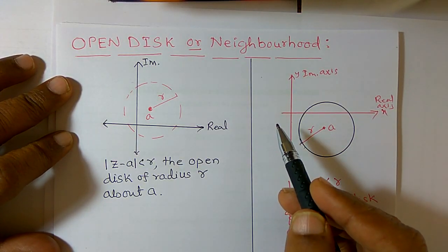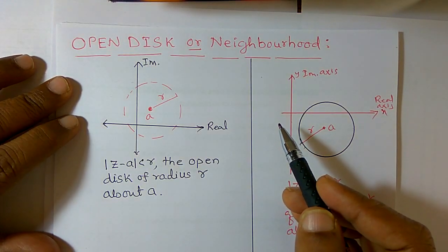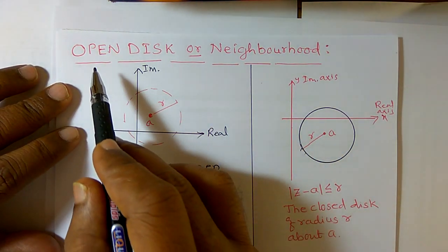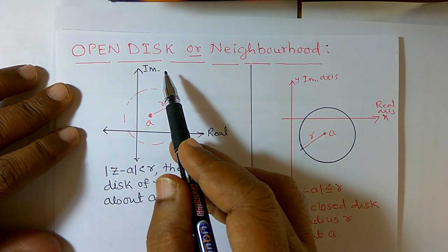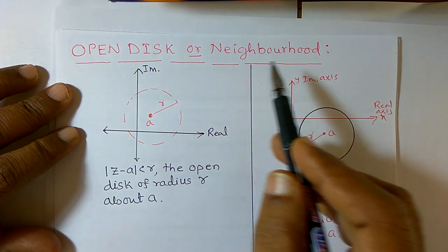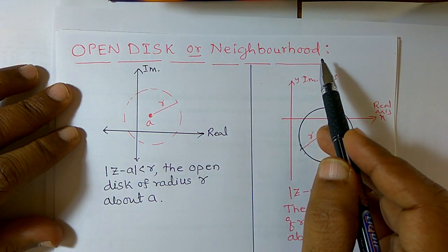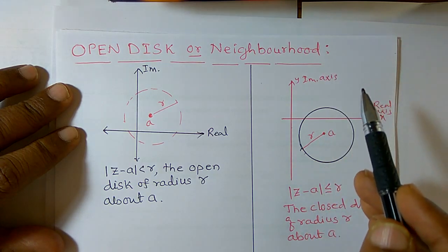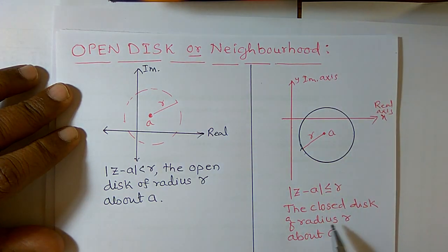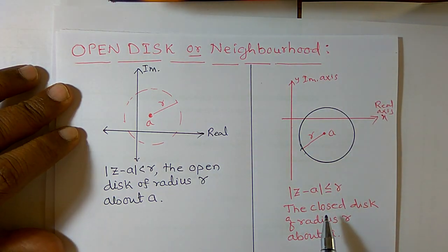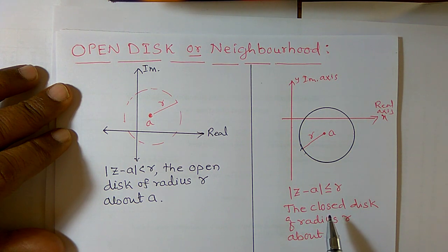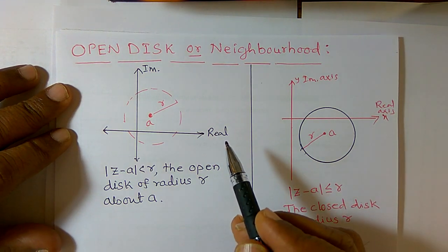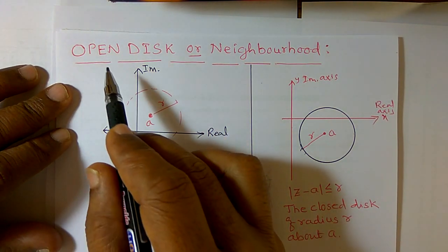In this video I am going to introduce a new word, namely open disk, or what we call it as a neighborhood. I am also going to introduce one more word, namely closed disk. We are going to learn these two words — open disk and closed disk — and discuss them one by one.